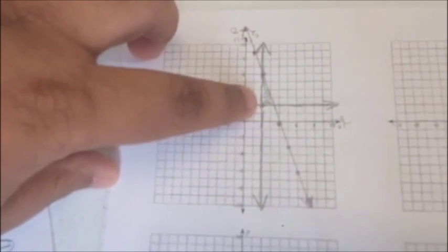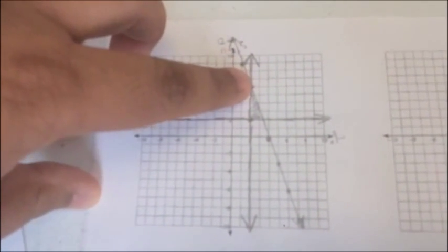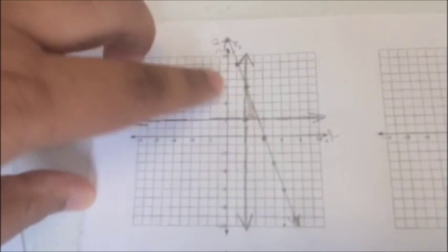And the shaded in part is the feasibility region. And these are our vertices over here. One is over here, the other one is over here, and the last one is over here.